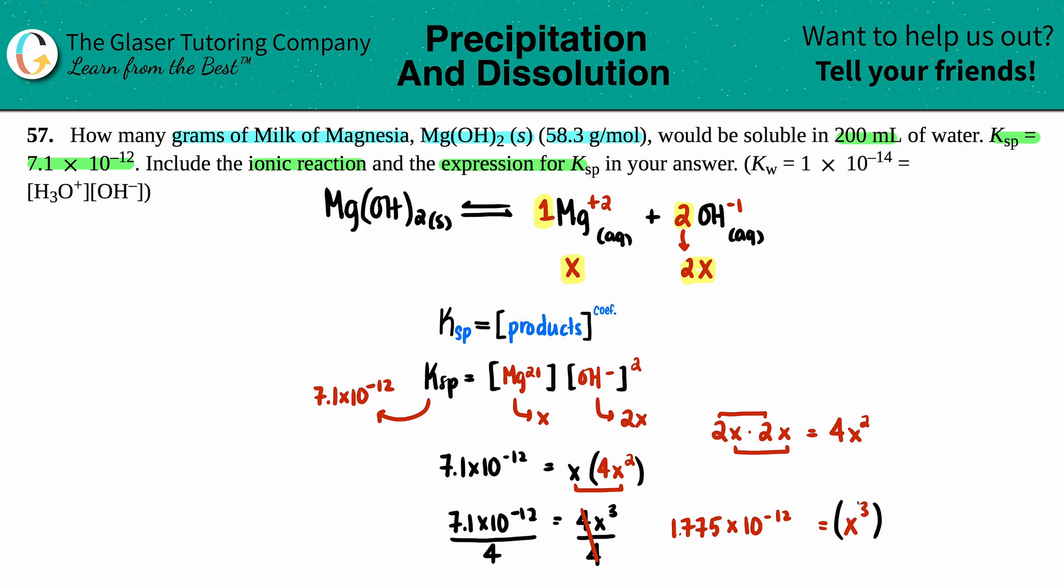Ultimately, we will be doing the cube root on both sides. The cube root is the same thing as raising this to the inverse: three over one, so we'll raise it to the one third. On both sides, do the same thing. The three cancels out here, and now you have x equals whatever that value is. I'm going to raise that to the one third and get 1.21 times 10 to the negative fourth, and that's molarity.